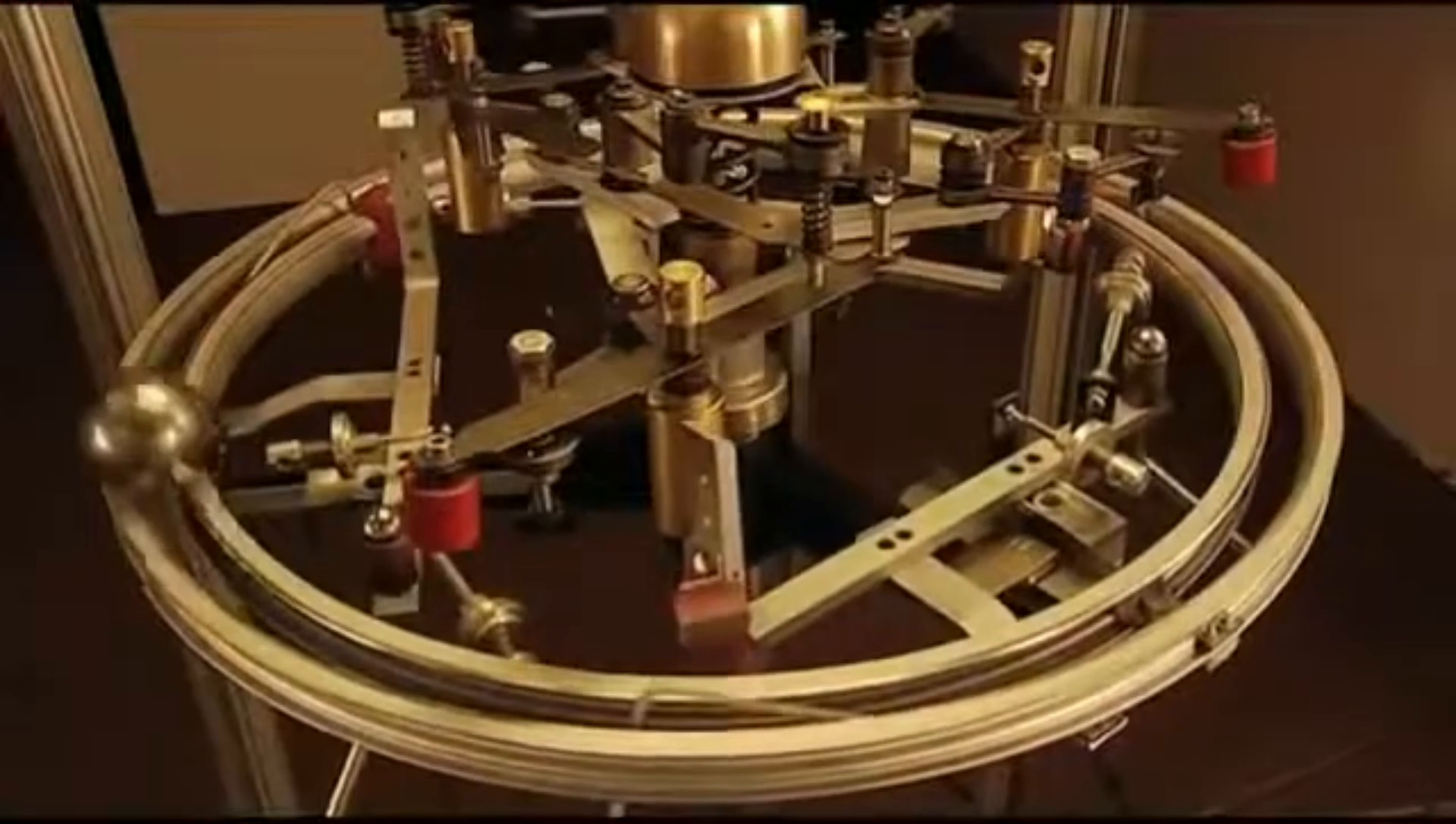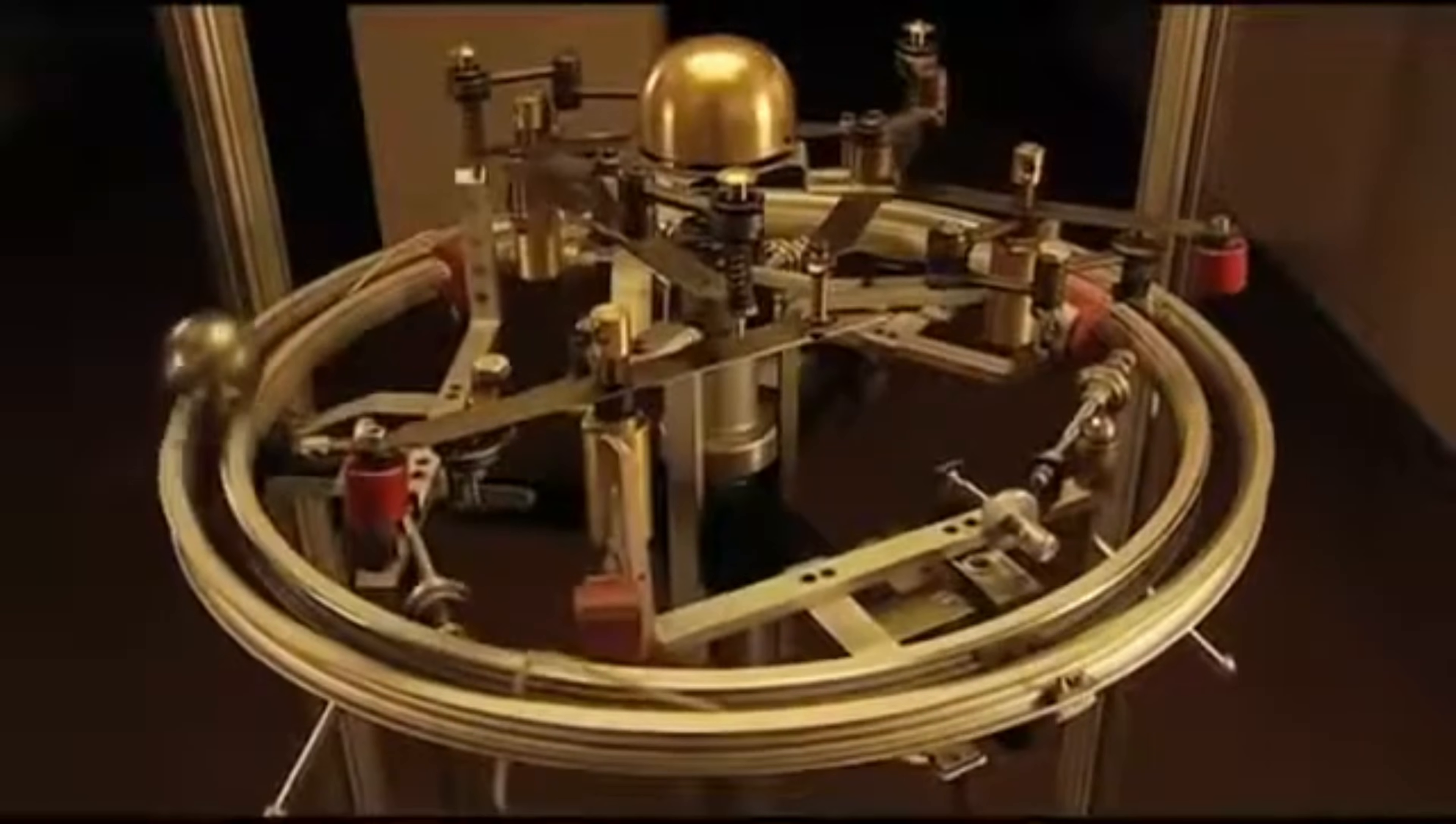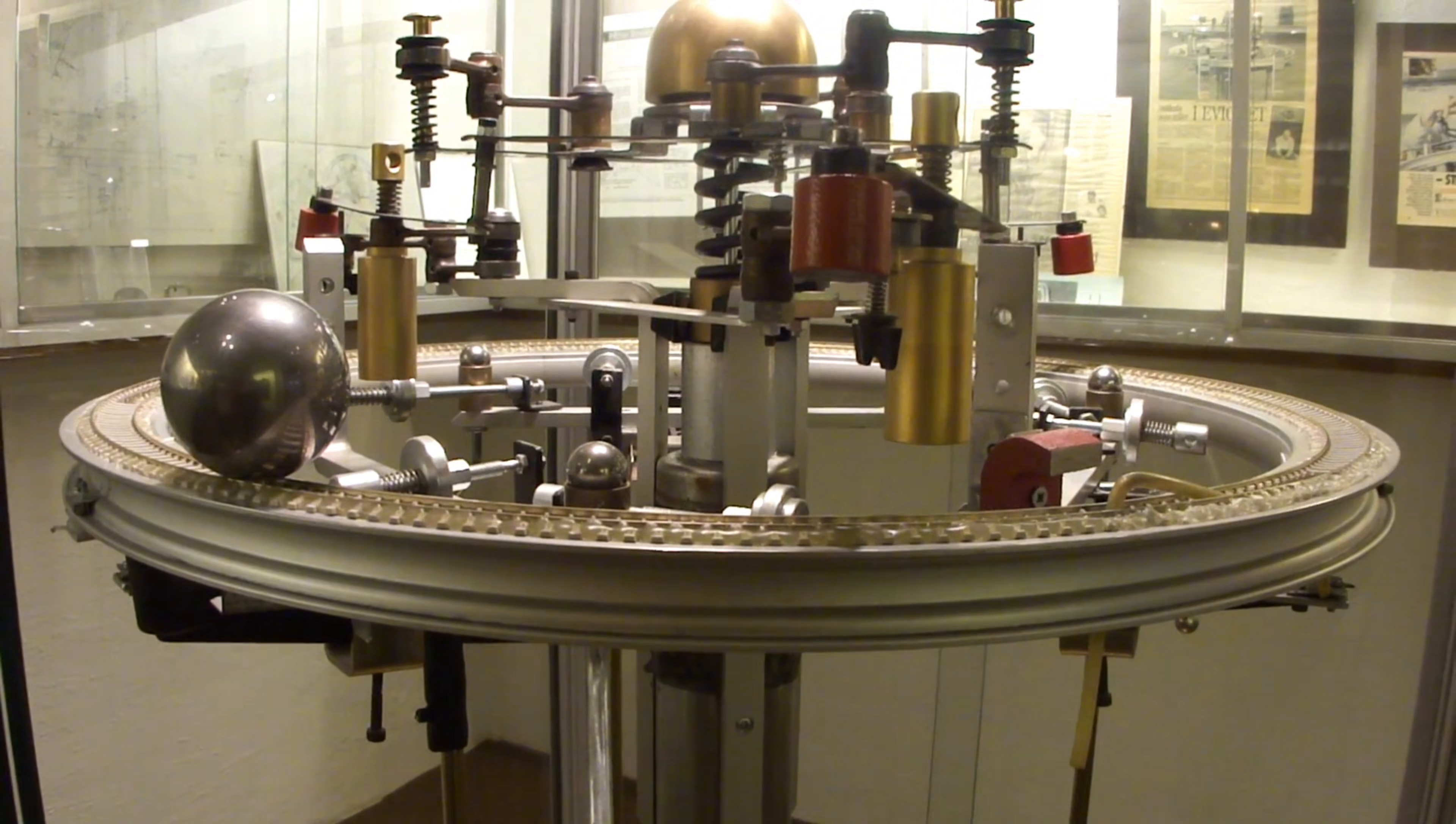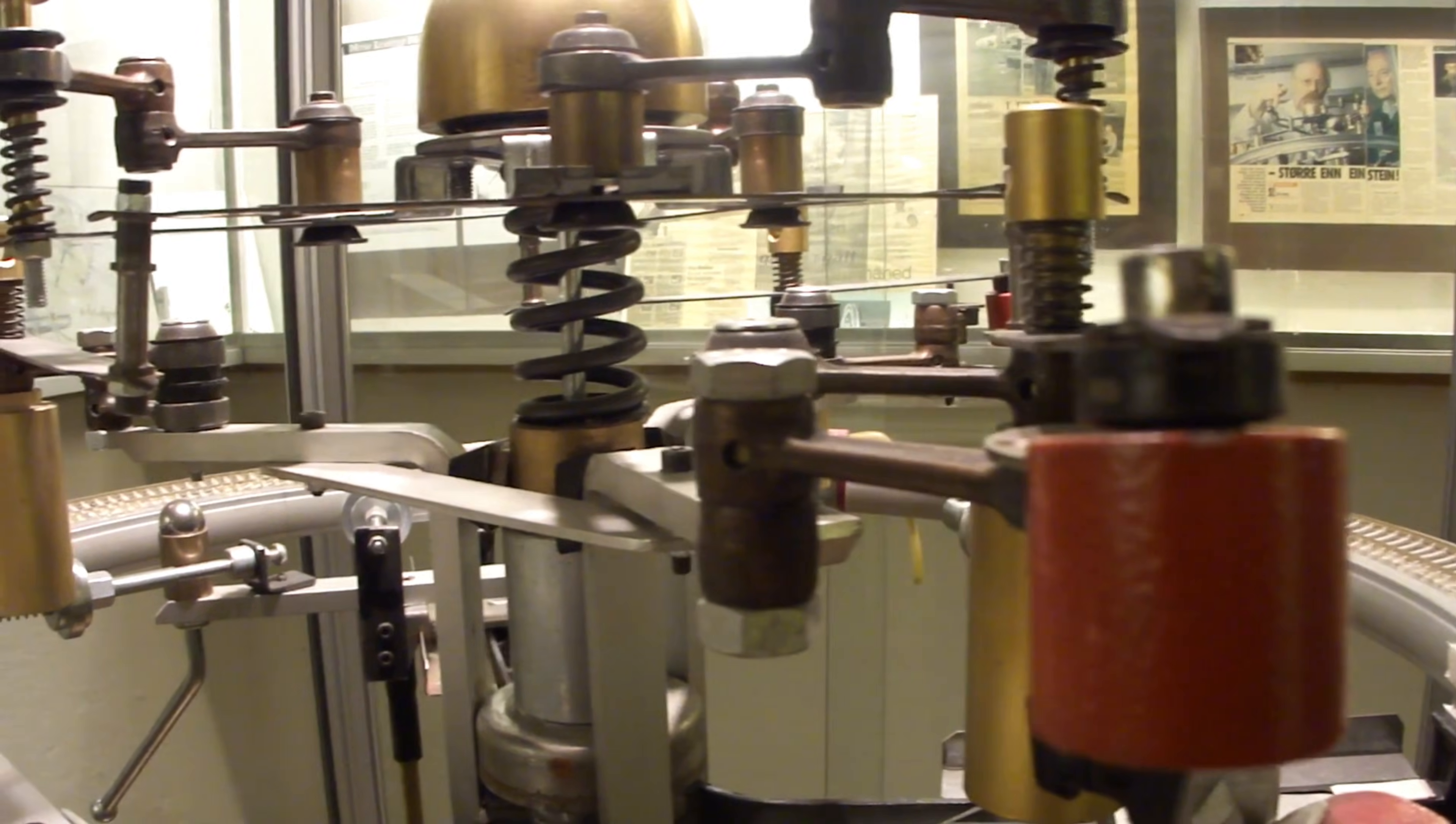Finsrud took the possibility of interference quite seriously. He reportedly kept the machine locked behind sturdy doors and even stored it in a secure vault at night. Only trusted friends or fellow engineers were allowed to see it in action, and then only under supervision. Some speculated that he even hired private guards or set up alarms around his workshop. Whether he was truly threatened or simply being cautious, the effect was the same. The machine became an even bigger secret. Each new padlock only made outsiders more curious. Was the invention truly dangerous or just powerful knowledge? The secrecy turned into part of the legend.